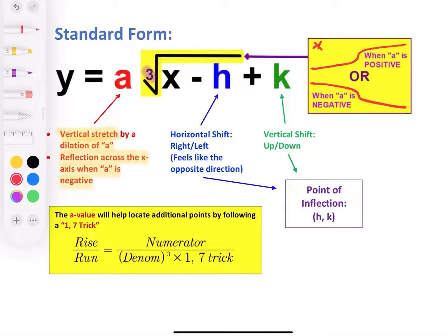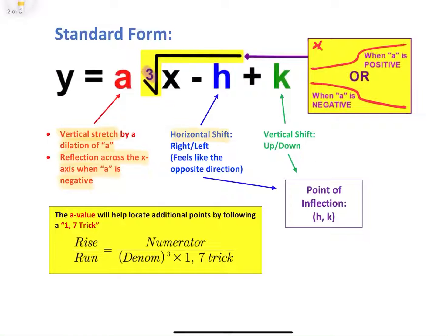Then we have our horizontal shift, and our horizontal shift is our h value. It's going to shift our graph either to the left or to the right, and it's going to feel like it's going in the opposite direction. So if it says x minus 2, well, that means we're going right 2. And if it says x plus 2, well, that means we're going left 2. The k value is going to be our vertical shift, which means it's going to be shifting that graph up or down.